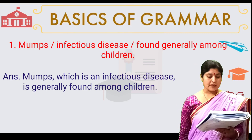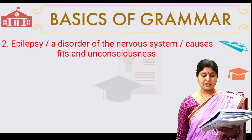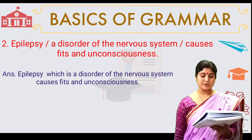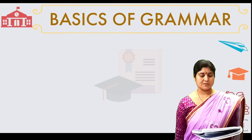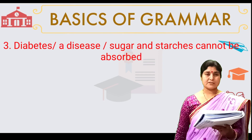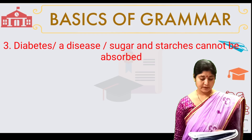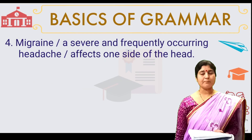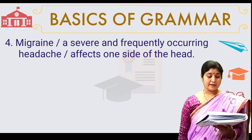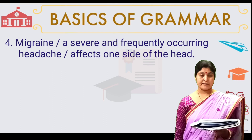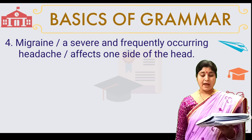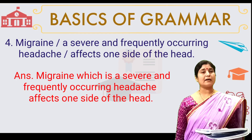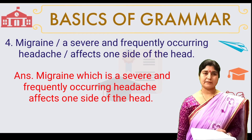Number two: Epilepsy, a disorder of the nervous system, causes fits and unconsciousness. Answer: Epilepsy, which is a disorder of the nervous system, causes fits and unconsciousness. Number three: Diabetes is a disease in which sugar and starch cannot be absorbed. Number four: Migraine, a severe and frequently occurring headache. Answer: Migraine, which is a severe and frequently occurring headache, affects one side of the head.